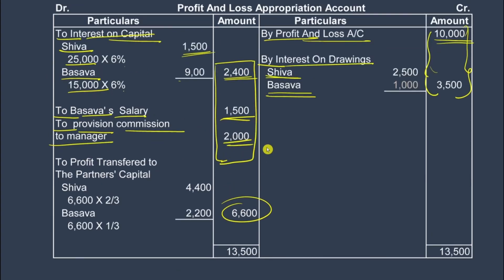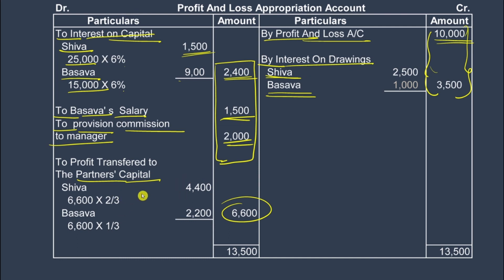That is the last step — dividing the remaining profit of 6,600 rupees. The profit is transferred to the partners' capital accounts. Since we are following the fluctuating capital method, profit is transferred to the capital account and not the current account.